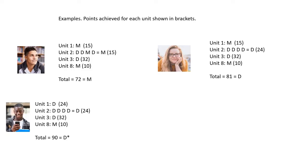This young man here. Bright young man. Unit one, he got a distinction. Unit two, D, D, D, D. Distinction. Unit three, he got a distinction. 32. The optional unit, he got a merit. 10 points. But his total is 90. And that's a D star. D star. For the extended certificate. So, D star, D star.